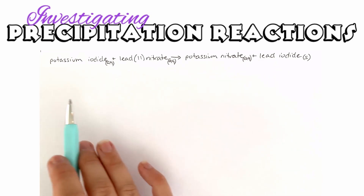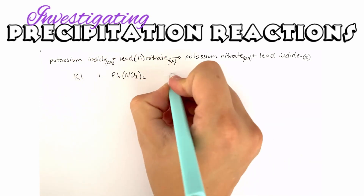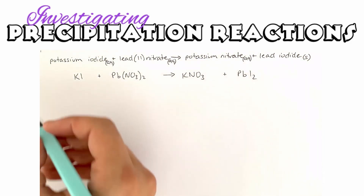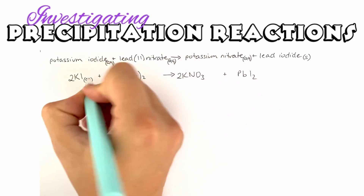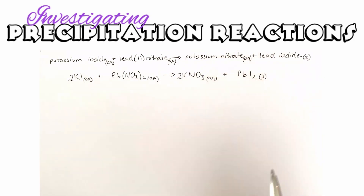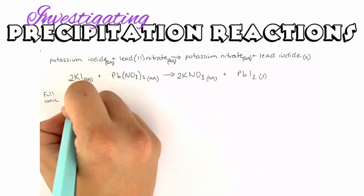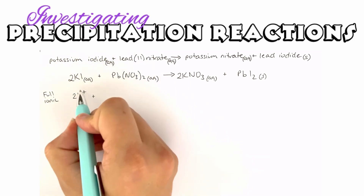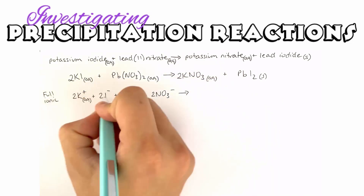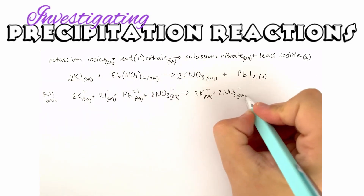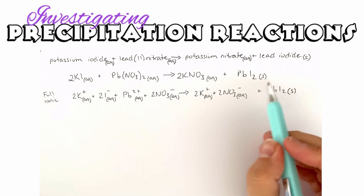Remember to start by writing the full balanced equation before getting into the ionic ones. Make sure that you balance your equations and also write all of your states of matter. Now we can look at our full ionic equation — we split the species into ions. We've got 2 K⁺ and 2 I⁻, and the solid lead iodide we do not split into ions because it's in an ionic lattice, not free ions.